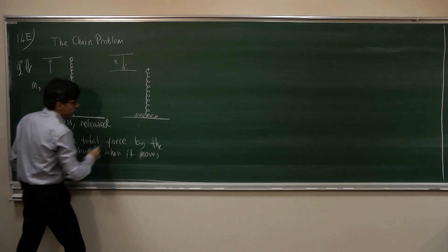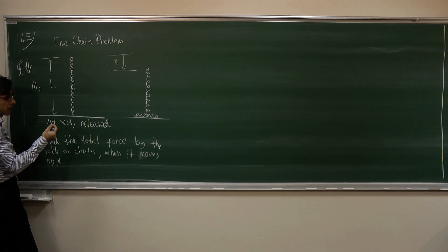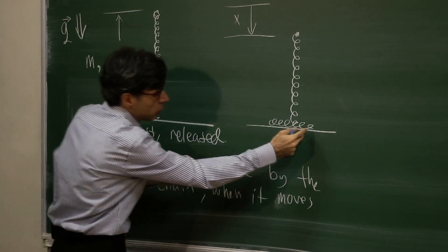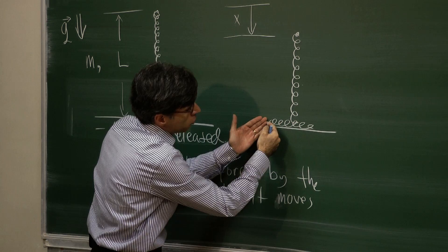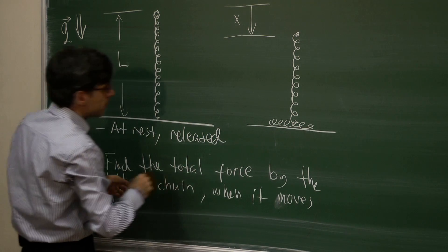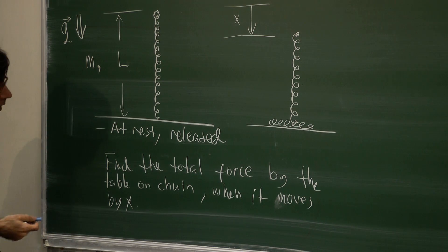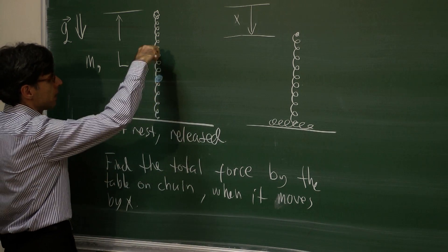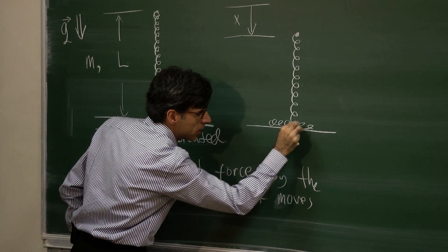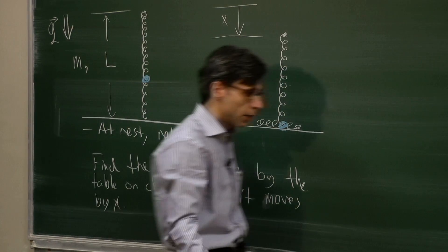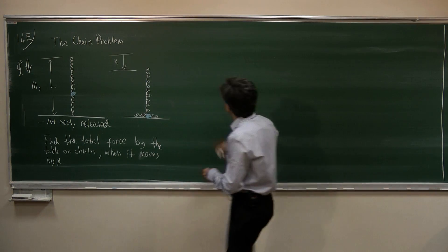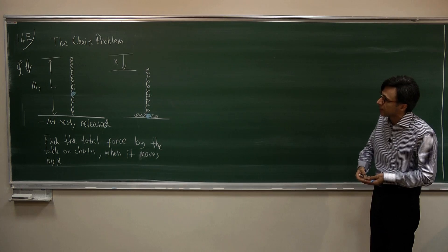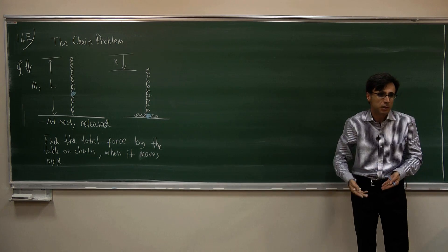The force acting on the chain can be divided into two pieces. One piece is going to stop the link of the chain when it hits the table. The other is going to be the total force acting on the chain links already on the table. In order to find the force to stop the chain link, mark a chain link which is going to have traveled a distance x and will hit the table at that instant. The question is: what is the velocity of that link?